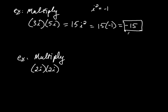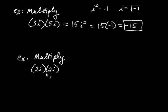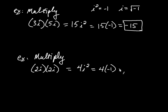It's important to realize that i is not negative 1. Negative 1 is negative 1. i squared is negative 1, and that's because i is the square root of negative 1 — there's a big difference between those two. Let's multiply 2i by 2i. That's going to be 4i squared. And i squared is negative 1, so it's 4 times negative 1, which is negative 4.